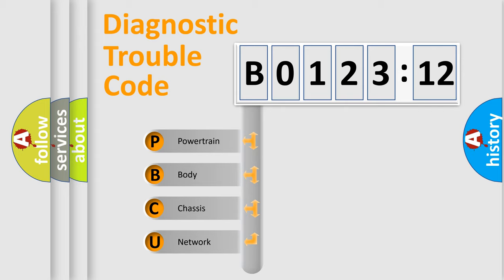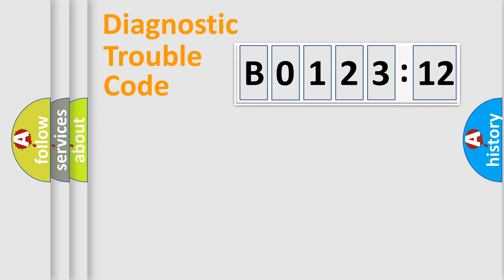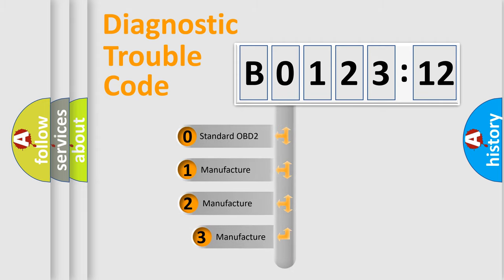We divide the electric system of automobile into the four basic units: Powertrain, Body, Chassis, Network. This distribution is defined in the first character code.